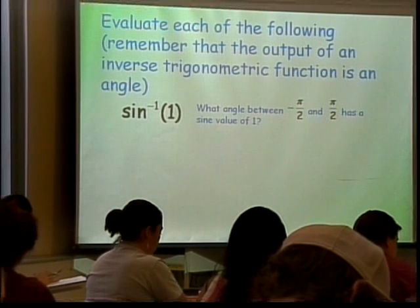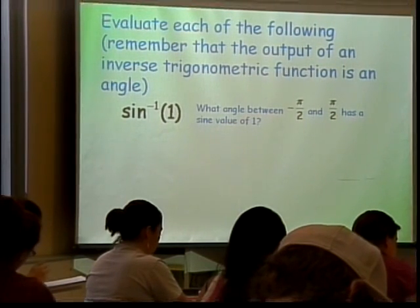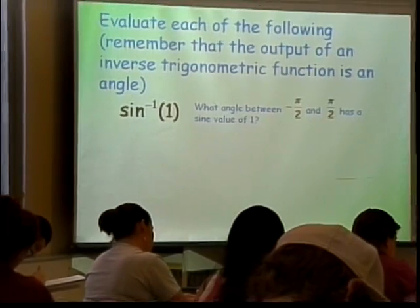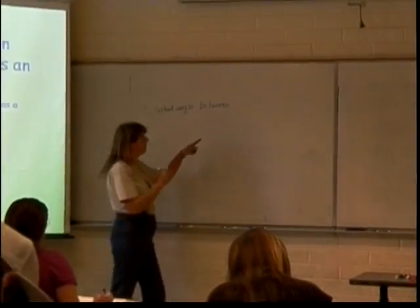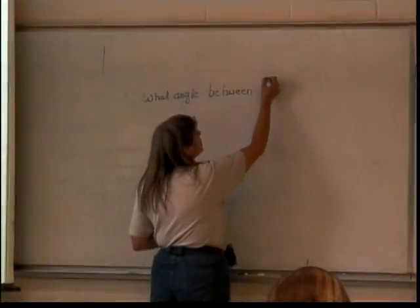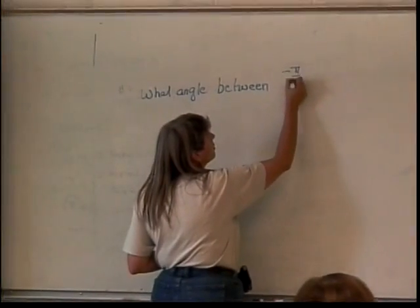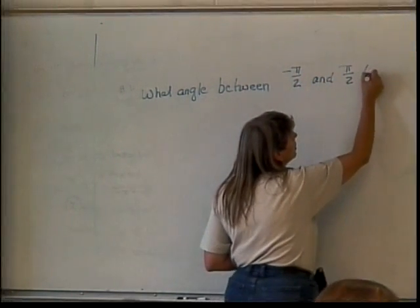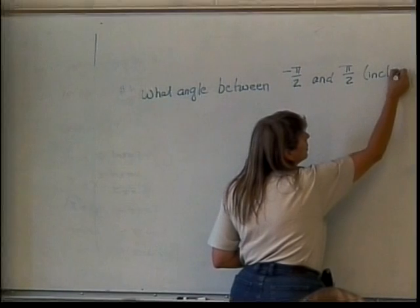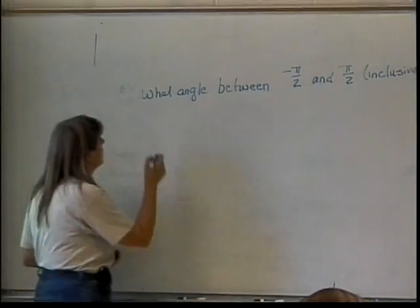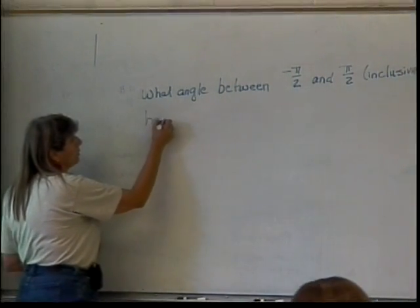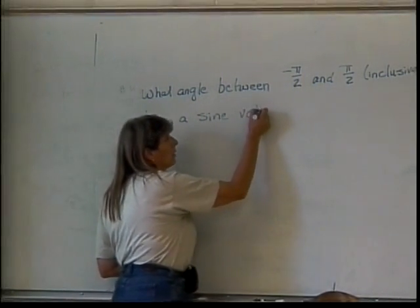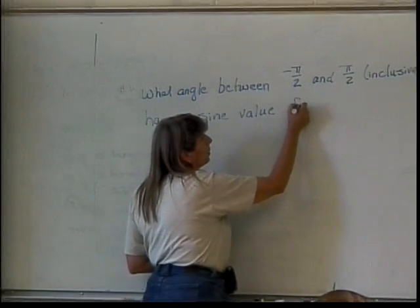So it's asking what angle between, and this is where knowing the range comes in, it's a sine, so the range of the sine inverse is negative pi over 2 and pi over 2, inclusive, that means I include both those ends, has a sine value of 1.